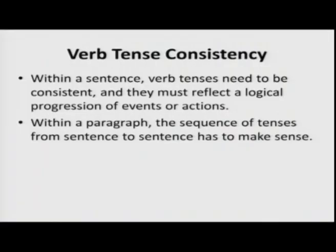We have looked at tenses. Now let us look at maintaining consistency. Within a sentence, verb tenses need to be consistent and must reflect a logical progression of events or actions. The tenses you use should accurately reflect the logical connections among events. Within a paragraph, the sequence of tenses from sentence to sentence has to make sense. Switching inconsistently — say from simple present in one sentence to simple past in the next — does not work.